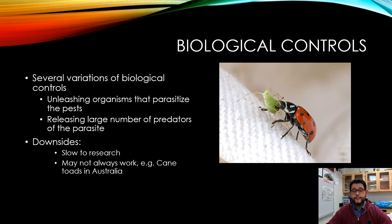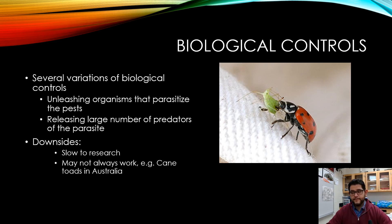The downside is it's very slow to get that research done. You have to do the research properly or you can end up with a problem like the cane toad in Australia. You should definitely look up cane toads and unnatural history — those were used in Australia, which has several cases of invasive species, but the cane toad was originally introduced as a biological control.